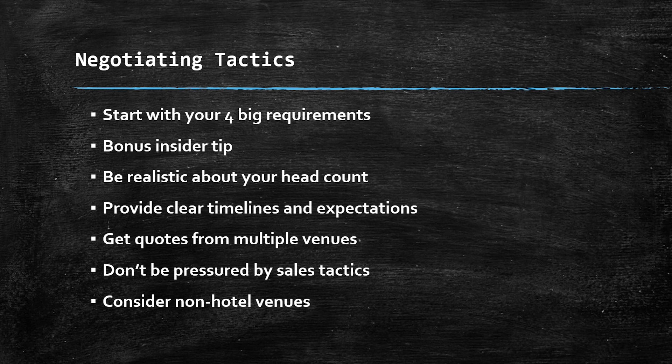The next topic is negotiating tactics. Negotiation between the vendor and the event manager is very important whenever you are going to search or hire a venue. The first step is to start with the big four requirements. At minimum, the four critical pieces of information to start venue negotiations are: budget, event dates, headcount, and space requirements — which can include your occupancy or accessibility needs.